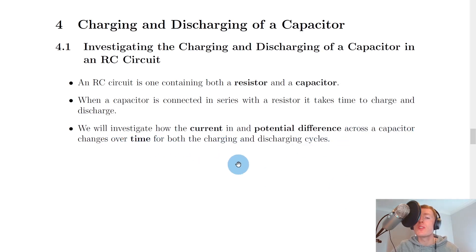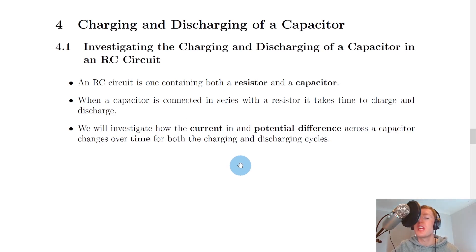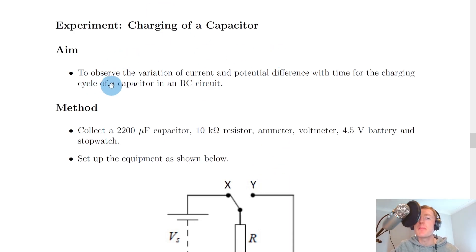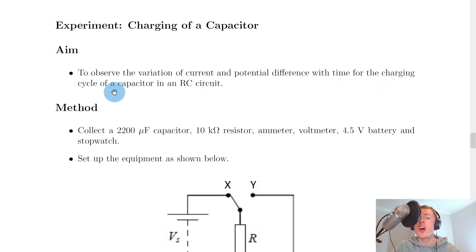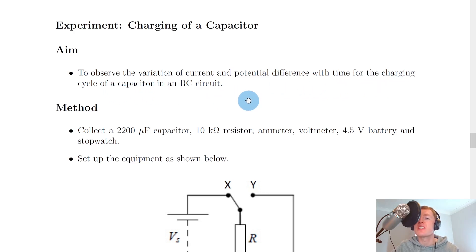In this video we're only going to look at the charging case, and in the next video we'll look at the discharging case. The aim of the experiment is to observe the variation of current and potential difference with time for the charging cycle of a capacitor in an RC circuit.